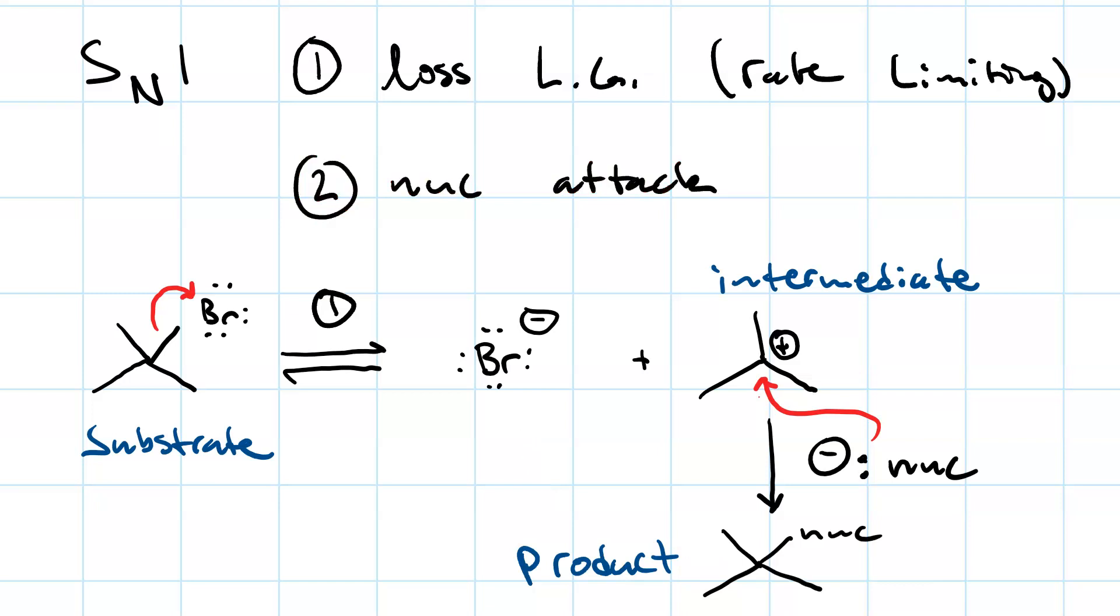Since the loss of the leaving group to form the carbocation is the slow step, the rate of the reaction equals a rate constant times the concentration of the substrate. It's first order and thus it's unimolecular. That's why this is SN1.